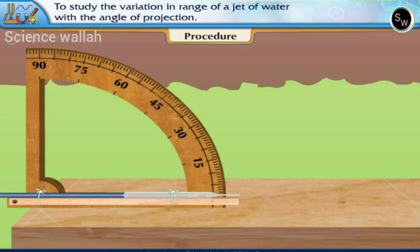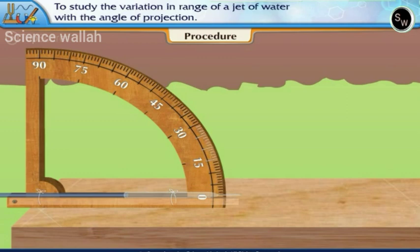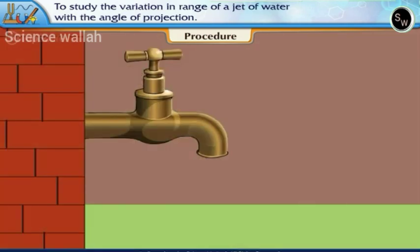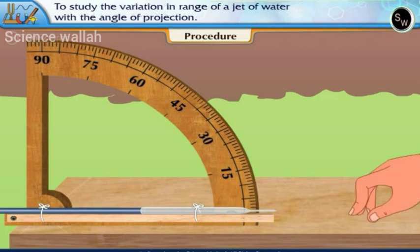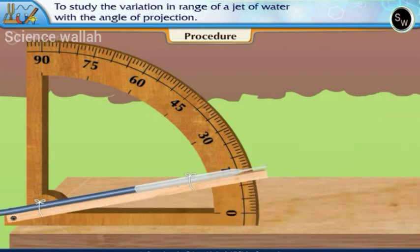It has a plywood protractor marked 0 to 90 degrees having an interval of 15 degrees. Connect the other end of the rubber tube to the water tap. Adjust the angle bracket so that water jet comes out making an angle of 15 degrees.